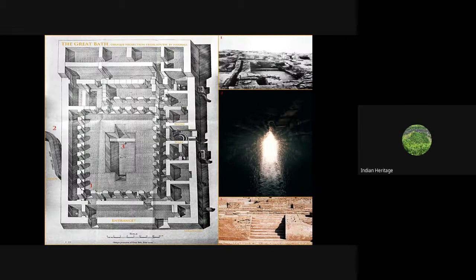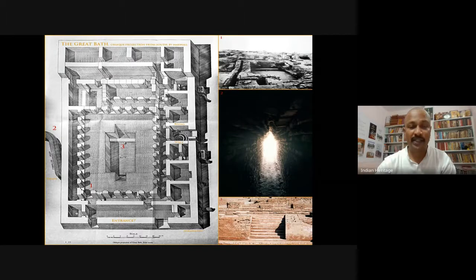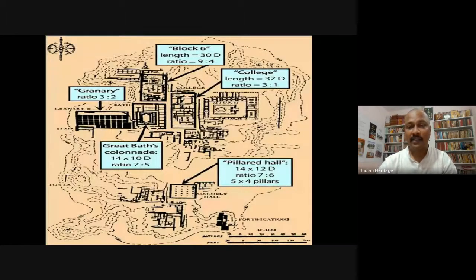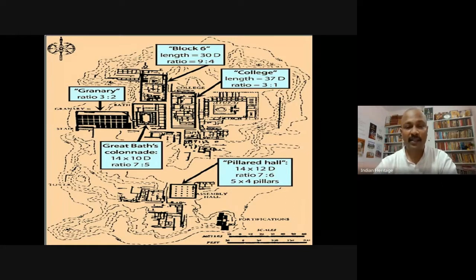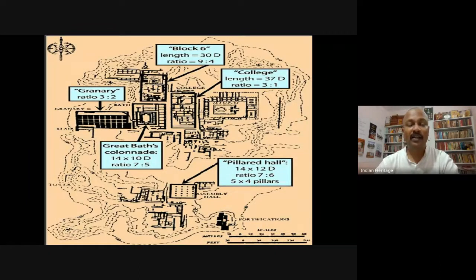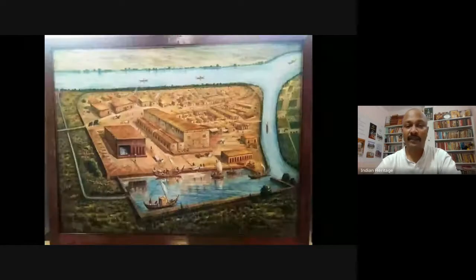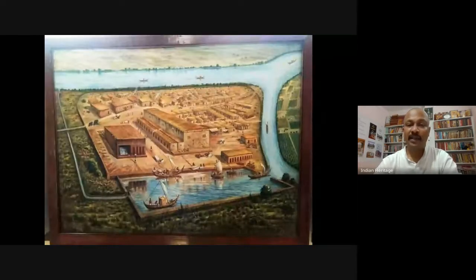We can see examples of the citadel and the Great Bath — the best construction and architecture styles used here. Room sizes and proportions are notable. Block number six includes what may have been a college — an educational space — along with the pillared hall and granary.